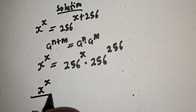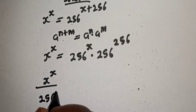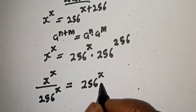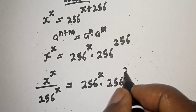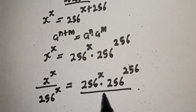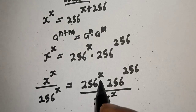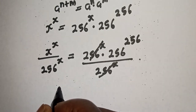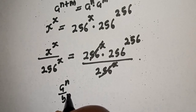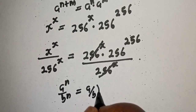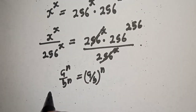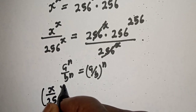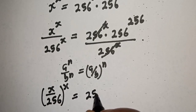Now let's divide both sides by 256 raised to power x. That is s raised to power s over 256 raised to power s, multiplied by 256 raised to power s. This will cancel. Take note of this rule: a raised to power n over b raised to power n is equal to a over b all raised to power n. So here we have s over 256.